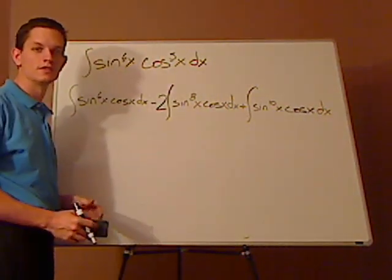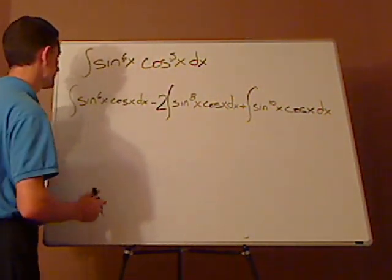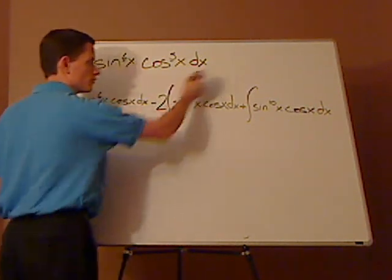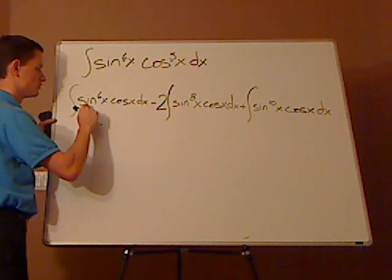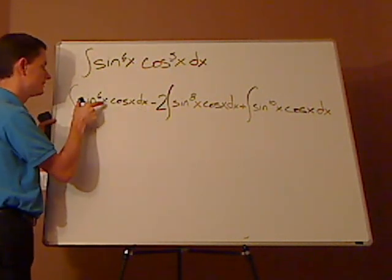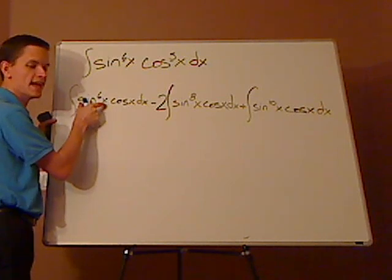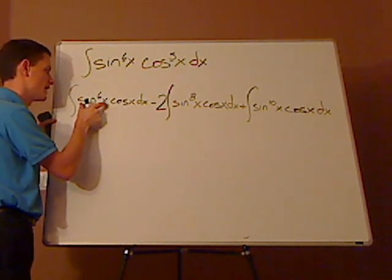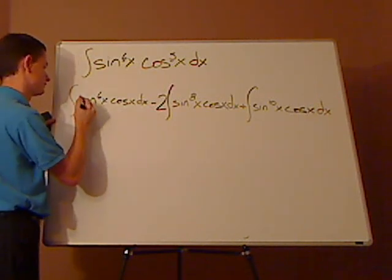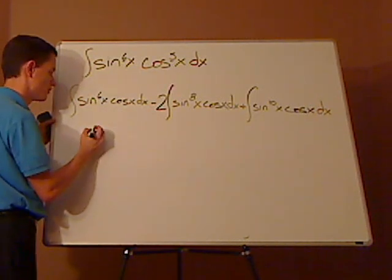Alright, and then you just simply apply the power rule. So the power rule, remember what I had up here? It's just u to the n du. u is sine x, the derivative of sine x is cosine x dx. So apply the power rule.